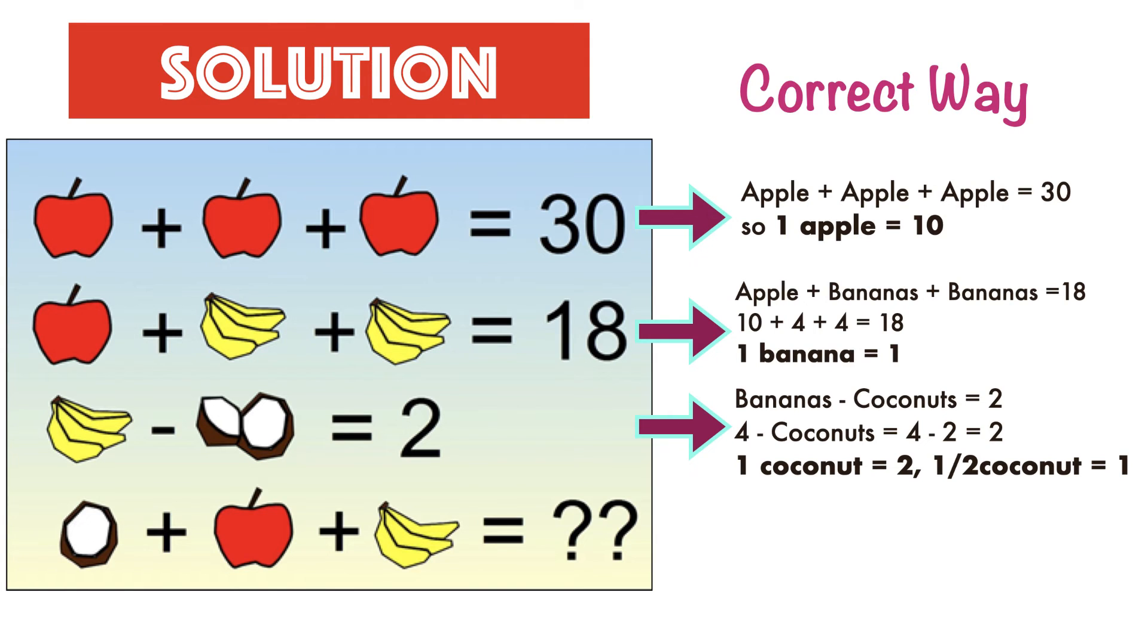So the last equation shows one half of the coconut and 3 bananas. The final equation can be written as half coconut plus 1 apple plus 3 bananas equals 1 plus 10 plus 3, which equals 14. So the answer to the final equation is 14.